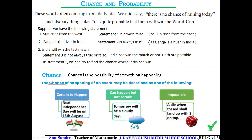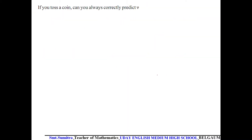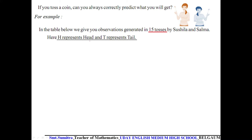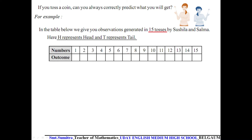If you toss a coin, can you always correctly predict what you will get? It's difficult to predict. Two friends, Sheila and Salma, are tossing a coin 15 times. We represent H for head and T for tail, and prepare a table with numbers 1 to 15 for the outcomes.